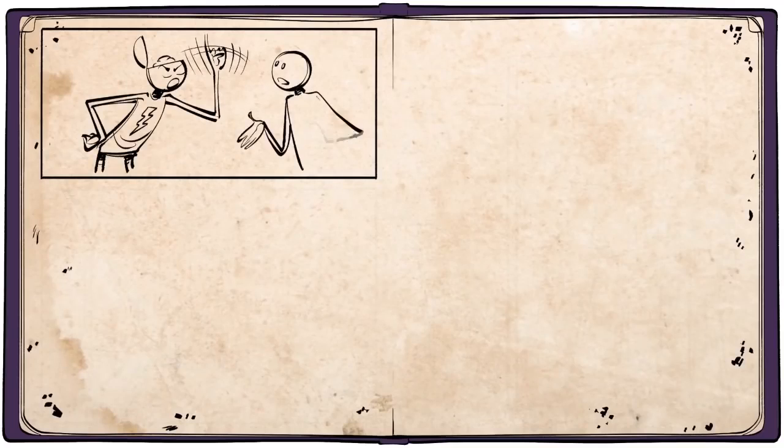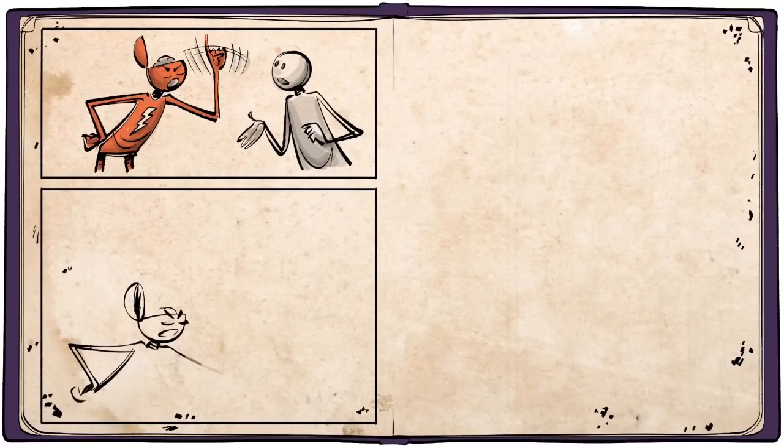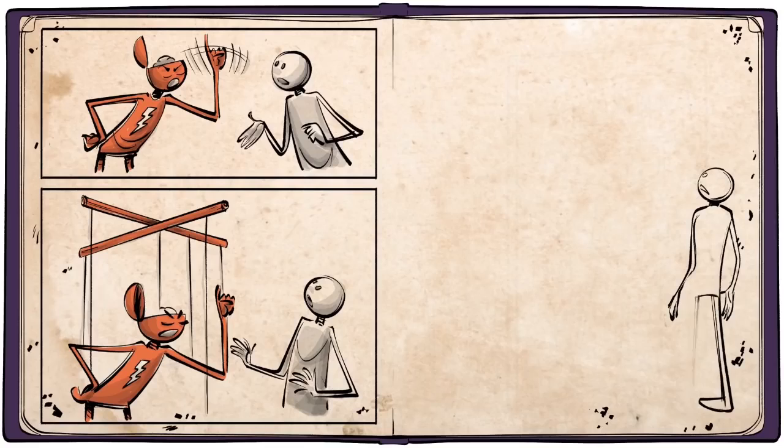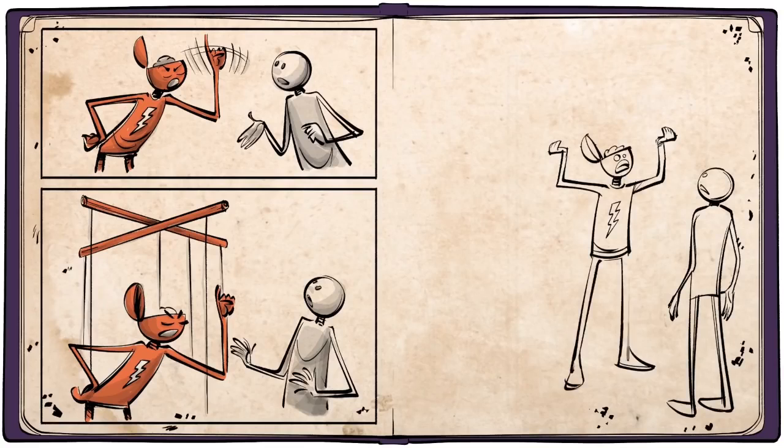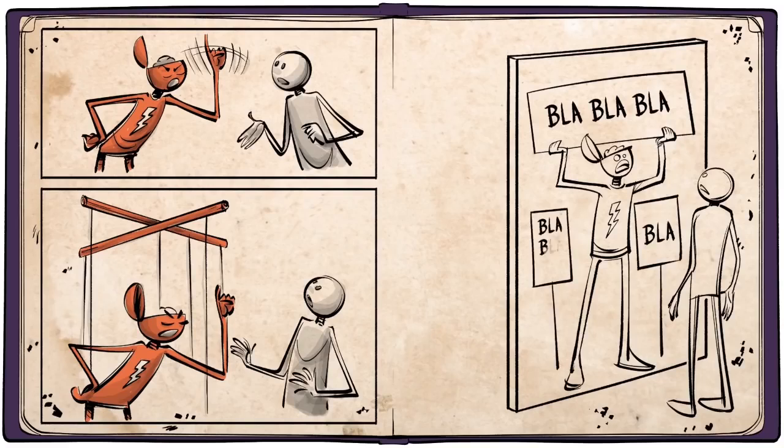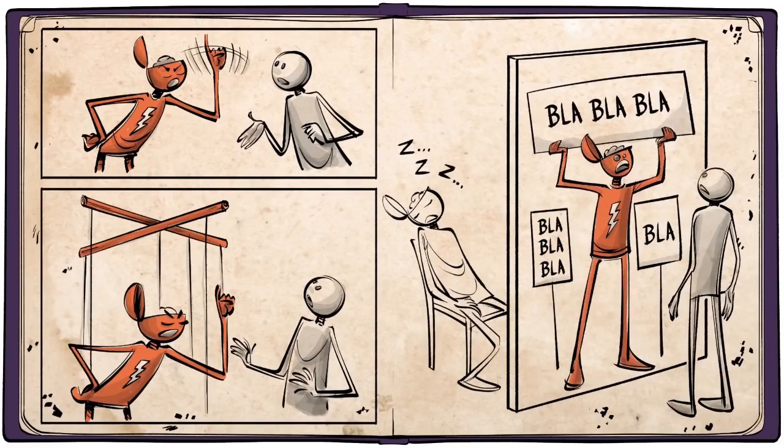The fact that the stupid person is often stubborn must not blind us from the fact that he is not independent. In conversation with him, one virtually feels that one is dealing not at all with him as a person, but with slogans, catchwords and the like, that have taken possession of him.